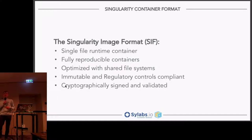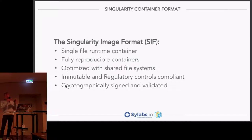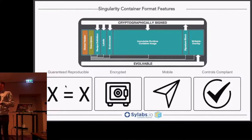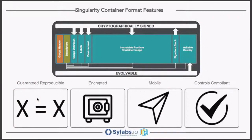The other thing that having it as a single file is really good for is immutability — complying with controls like HIPAA or FERPA or whatever you're dealing with. We can also cryptographically sign it. Previously, Singularity was just creating a SquashFS and adding a little magic header block to the front to let Singularity know it's a Singularity image. But we took this a step further and extended it. This image here is essentially a diagram of what a SIF file looks like.